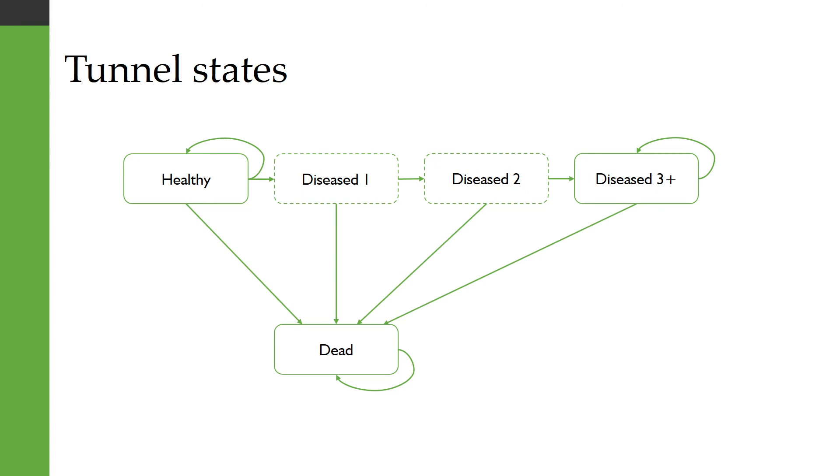So what we would do is we would expand that diseased state to have some extra tunnel states. So you can see here we have tunnel states indicated with dashed edges and so the first of these is people who have had the disease for less than a year or for up to one year and the second of these would be people who have had the disease for more than one but up to two years or cycles. You know your cycle length might not be a year.